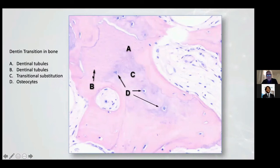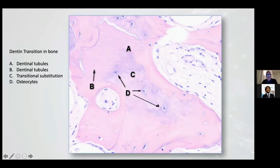Only here is the residual dentine. In the other part, it was completely absorbed and substituted by new bone. In D we have osteocyte — this is a transition substitution. And this is the tubules of dentine.